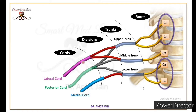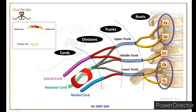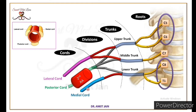In cords ka naam — lateral, medial and posterior — inki second part of axillary artery se relation ke according rakha gaya hai. Lateral cord lies lateral to the second part of axillary artery. Medial cord lies medial to the second part of the axillary artery. And posterior cord lies posterior to the second part of axillary artery.